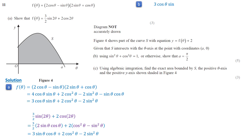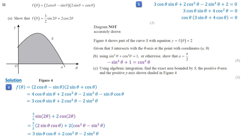Moving on to part B, f(θ) + 2 gives 3cosθ sinθ + 2cos²θ minus 2sin²θ + 2 equals 0. Using the identity cos²θ = 1 minus sin²θ to simplify, we get 3cosθ sinθ + 4cos²θ equals 0. Factoring out cosθ gives two conditions: cosθ equals 0, which results in θ equals pi over 2, the smallest positive value; or 3sinθ + 4cosθ equals 0, from which tanθ equals negative 4 over 3. The smallest positive value from this is greater than pi over 2, so A equals pi over 2.